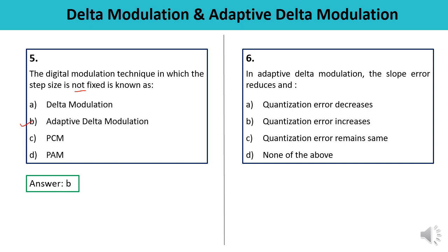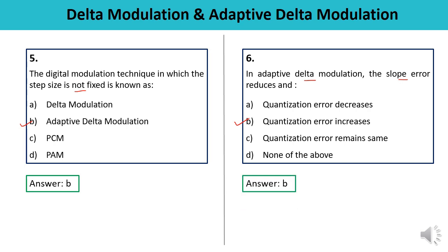Question 6: In Adaptive Delta Modulation, the slope error reduces — what is the impact on quantization noise? Does the quantization error decrease, increase, or remain the same? When slope error reduces, the quantization error increases. Vice versa also holds. So the answer is B — quantization error increases.